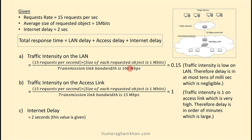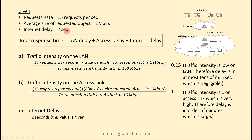To study the advantage of web cache in terms of response time, consider the same network: 100 Mbps internal links, a 15 Mbps access link, and web server replicas on the internet. The given data assumes 15 requests per second, each requested object is 1 Mbps, and the internet delay is 2 seconds.